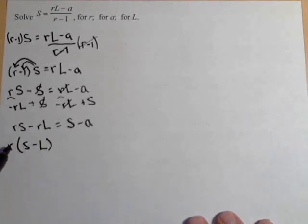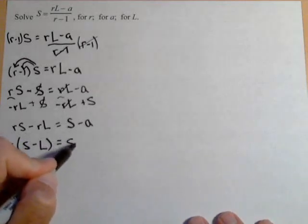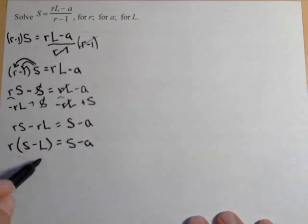And this might be easier to see going the other direction. To go from here to here, we would distribute the R, and that's where we get RS minus RL. Equals S minus A, we're almost done.